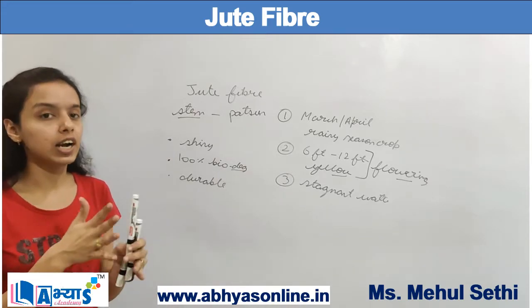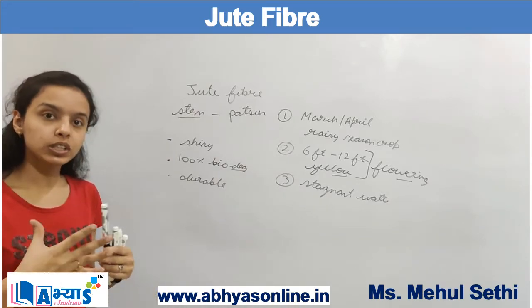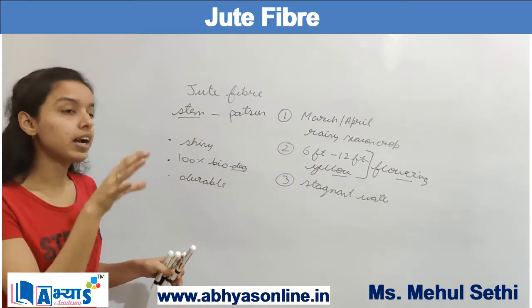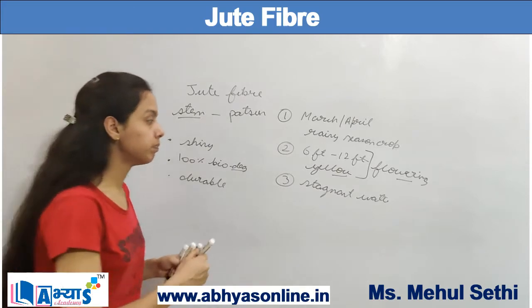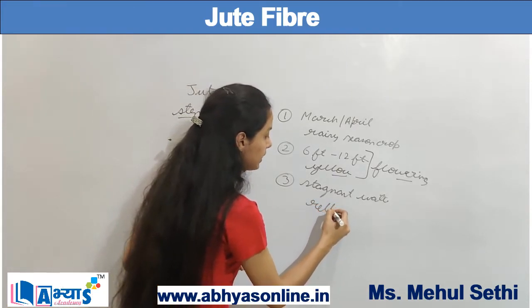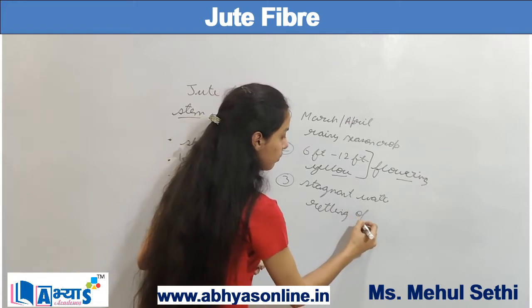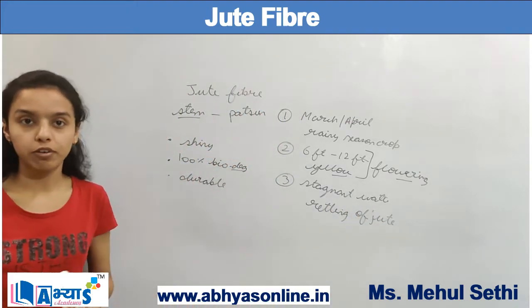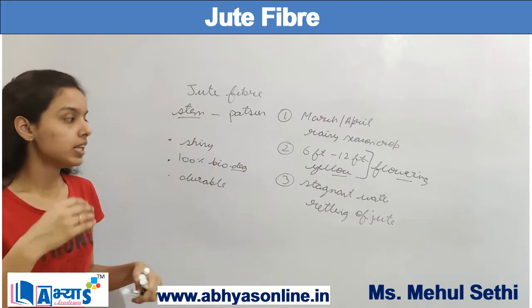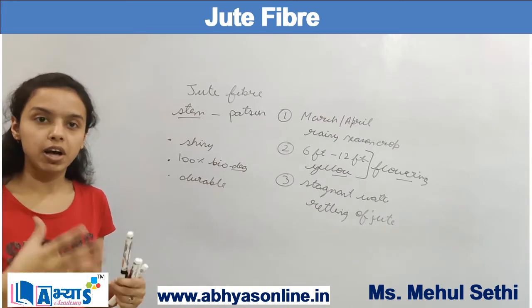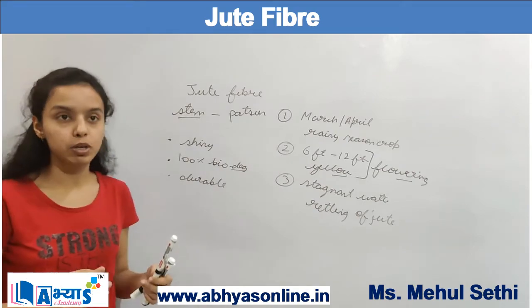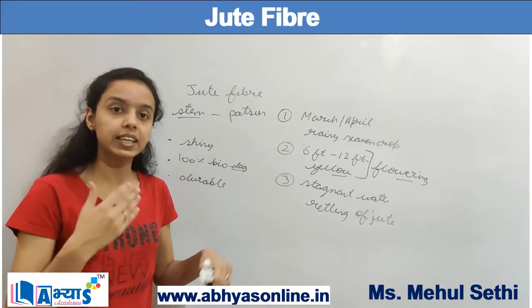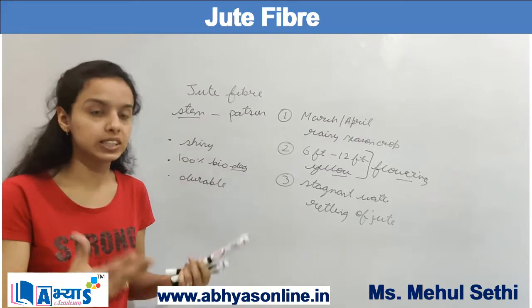The process by which fibers separate out from the bundles when dipped in water for a long period of time is known as retting of jute. Once the fibers are separated, the farmer collects these fibers and keeps them to dry in the sun.